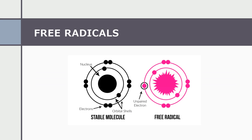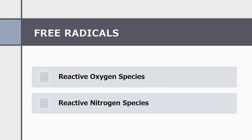A molecule is said to be stable when there are paired electrons on the outer orbit. In a free radical, the outer orbit contains unpaired electrons. There are various types of free radicals, out of which the reactive oxygen and nitrogen species have a great impact on the human body.